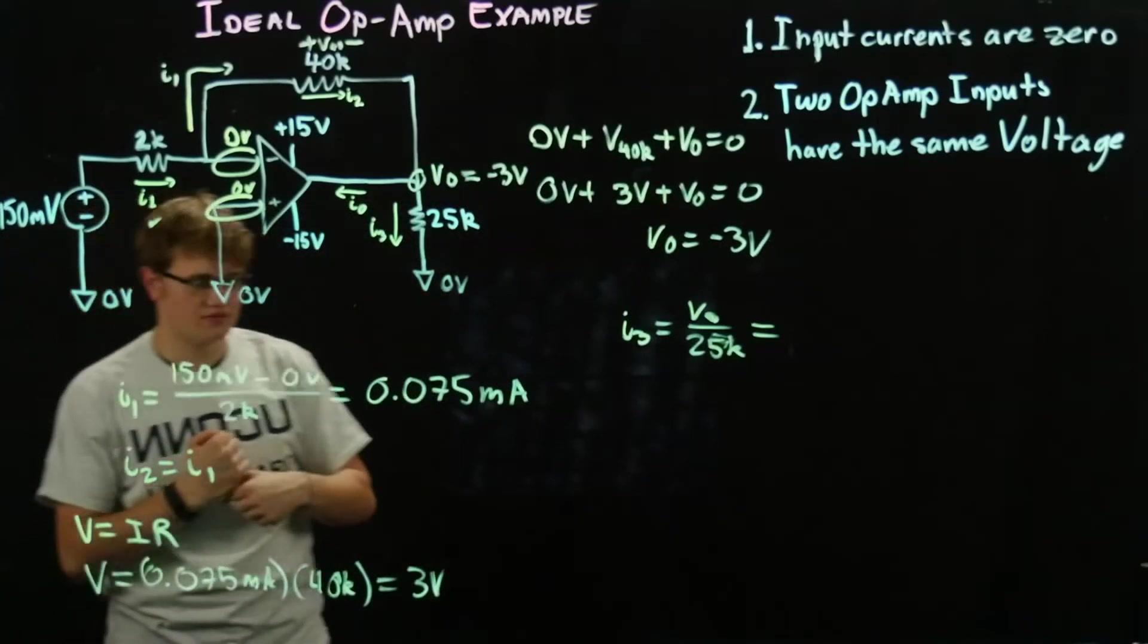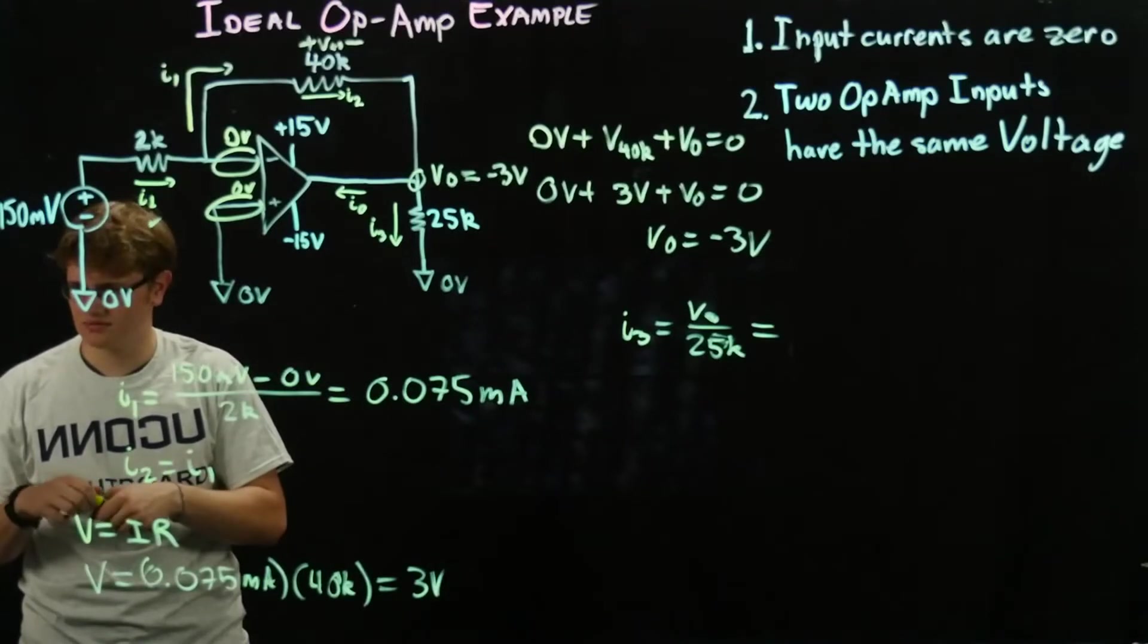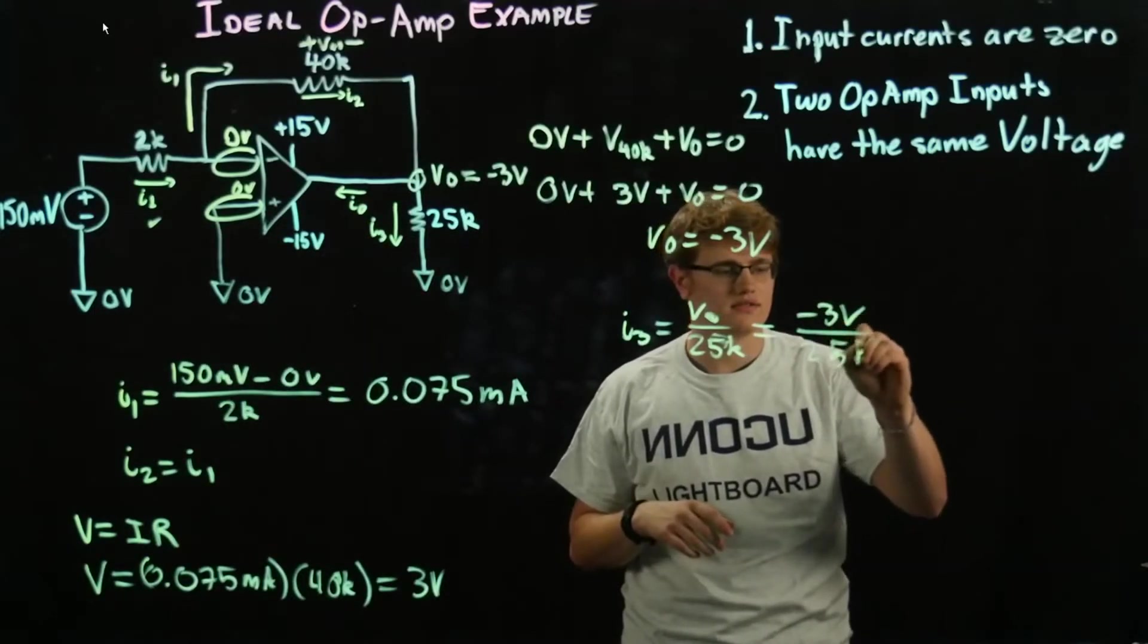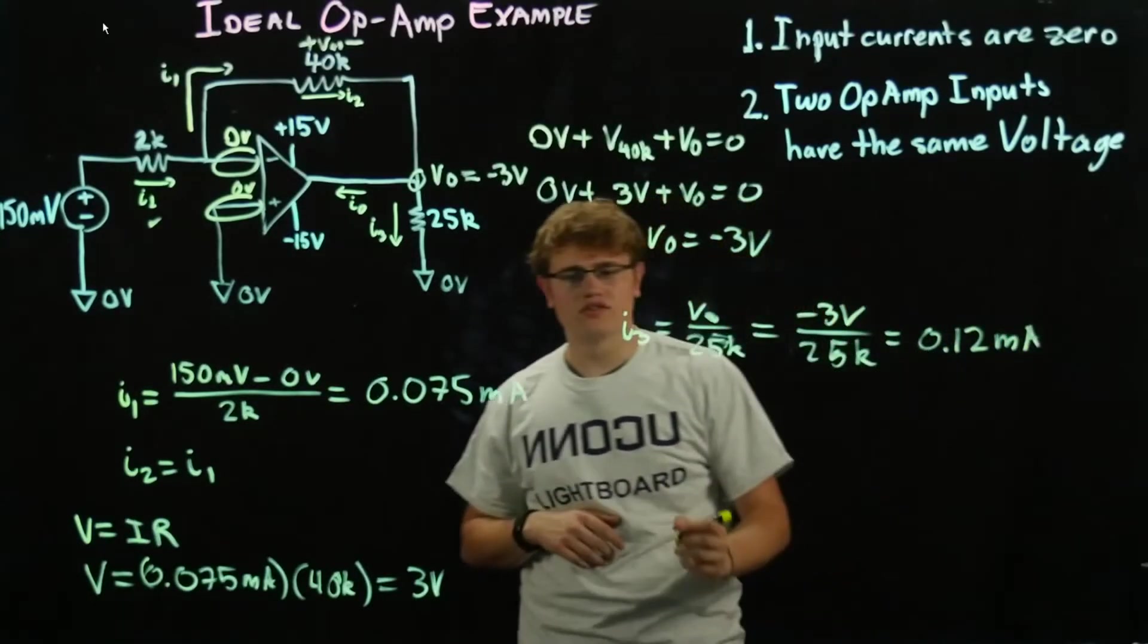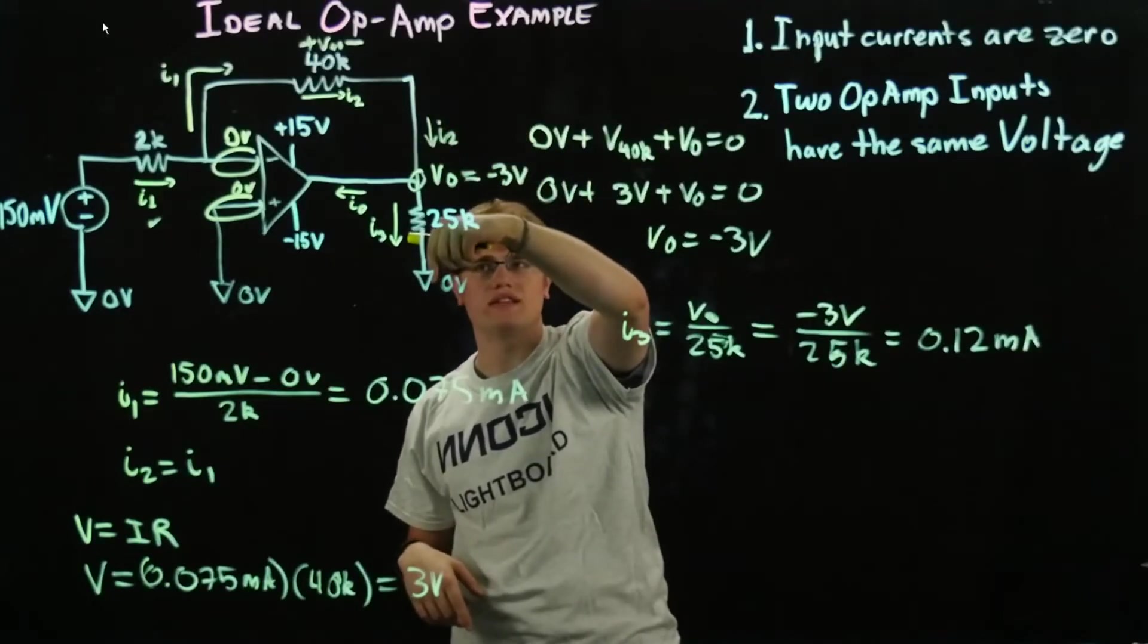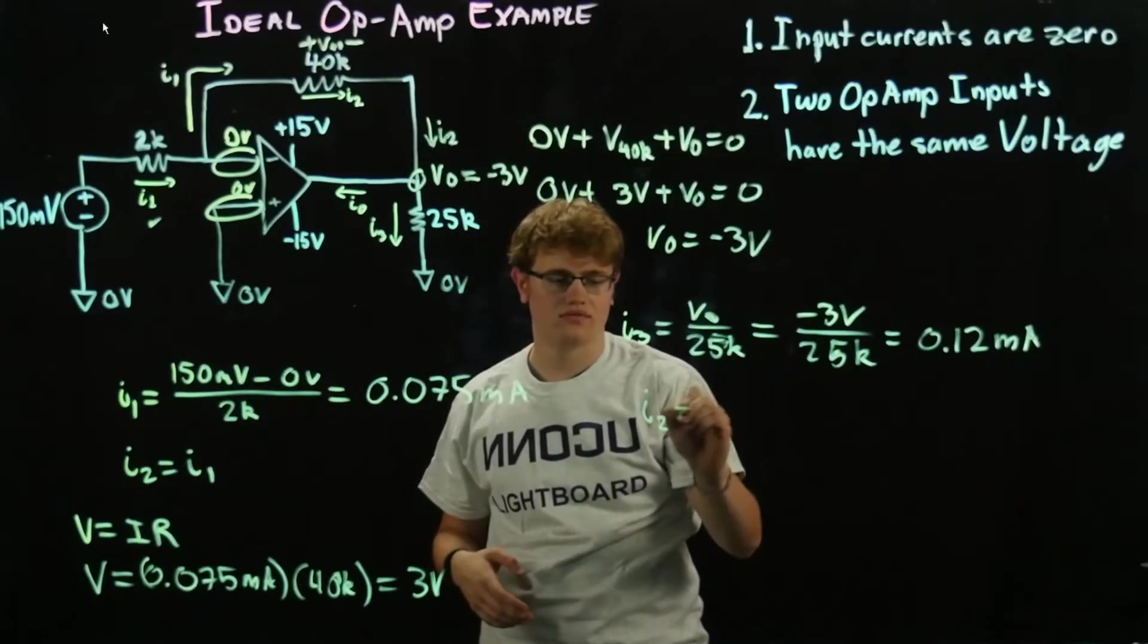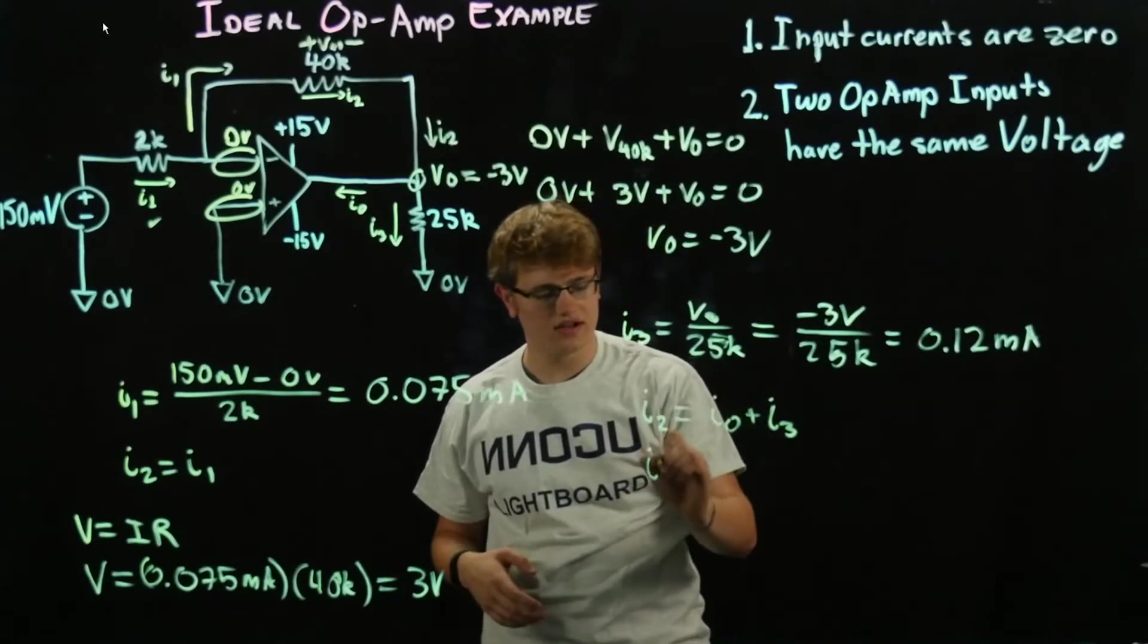That's going to be 0.12 milliamps, so now we know what's going in here, I2 is going in here, 0.12 is going in there, so we know the current going in there is going to be, remember our KCL, I0 plus I3 equals I2.